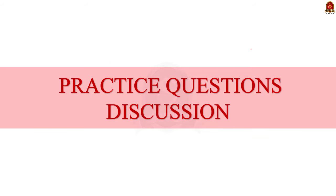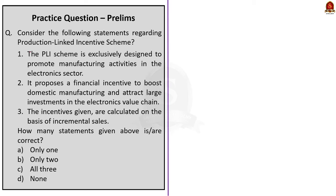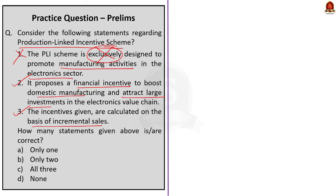Now we have come to the prelims practice question discussion. The first question is about the Production Linked Incentive scheme. The statement that the PLI scheme is exclusively designed to promote manufacturing activities in the electronic sector is incorrect — it covers various sectors like electronics, automobiles, pharmaceuticals and textiles. The statement that it proposes a financial incentive to boost domestic manufacturing and attract large investments in the electronics value chain is correct. The statement that incentives are calculated on the basis of incremental sales is also correct. So the correct answer is option B, only statements two and three.